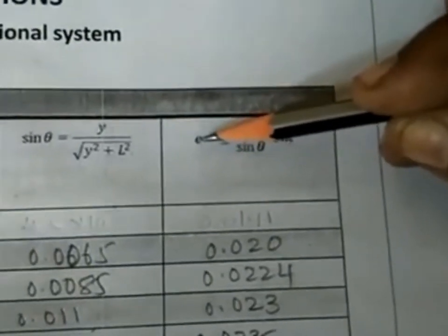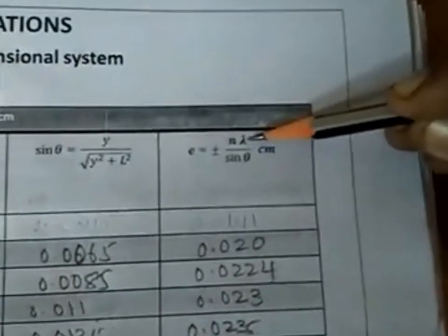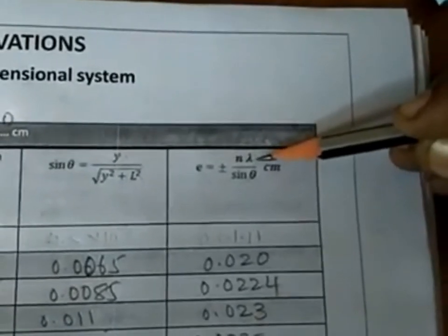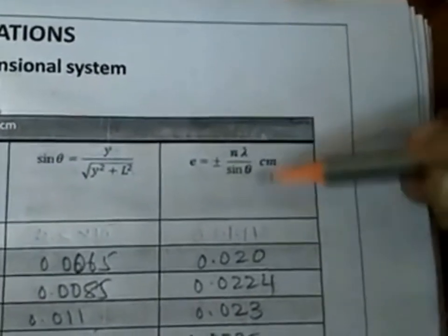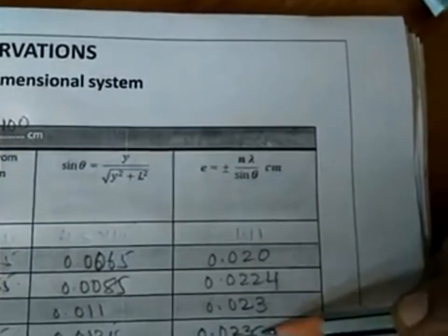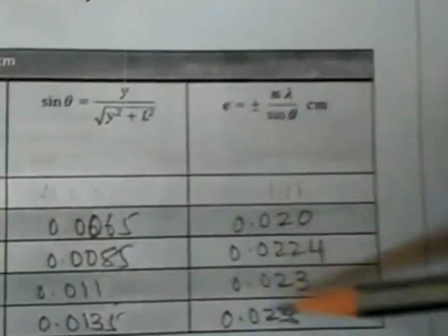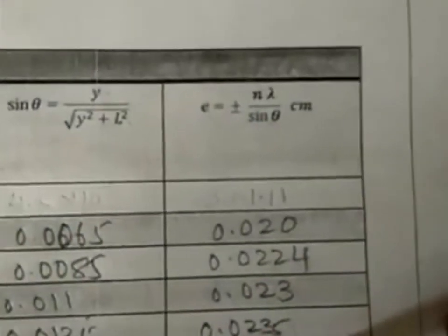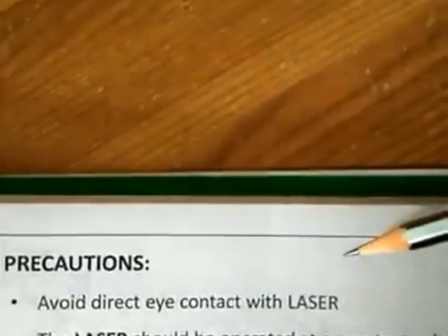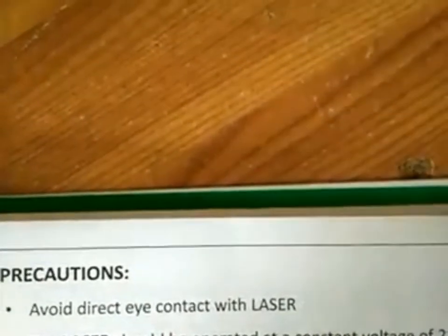Using the sinθ values, we calculate the width of the single slit — the micro-dimensional system — using the formula e = nλ/sinθ, where λ is the wavelength of the monochromatic laser beam, 6350 angstroms, converted to centimeters. For different orders of minima we get different e values; taking the average, we get approximately 0.022 centimeters. Precautions: avoid direct eye contact with the laser, and the laser should be operated at a constant voltage of 220 volts to avoid flickering of the beam.